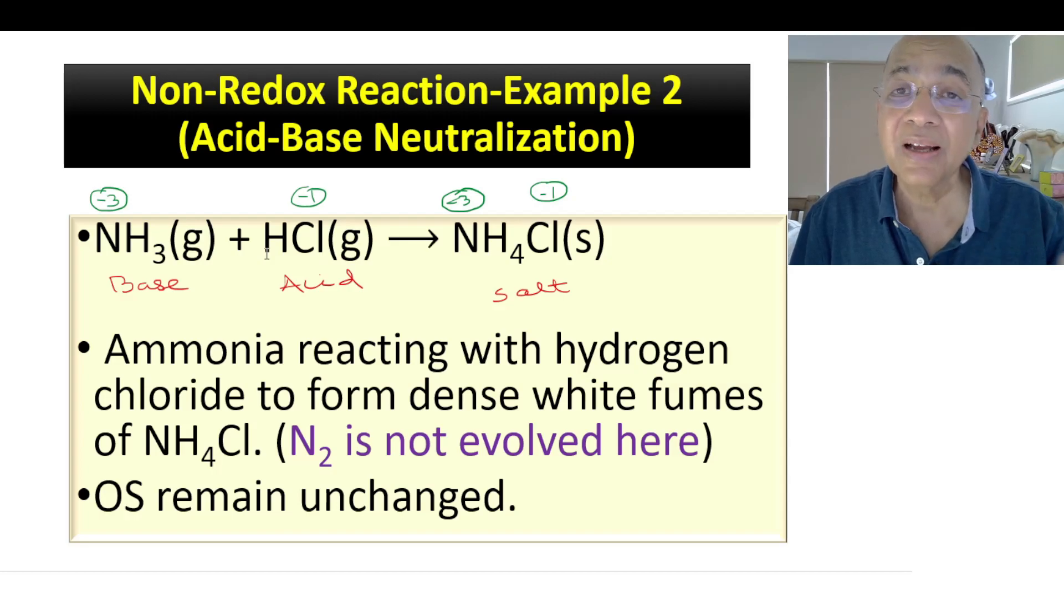Now say we go for another non-redox reaction where same ammonia will be used this time, but not chlorine. There is no element, it is a compound. So where ammonia reacts with HCl gas, they combine to form ammonium chloride. This is a combination reaction. You can also call it an acid-base reaction. You will know in a higher stage that ammonia is a base and HCl, as you know, is an acid. They react to form a salt.